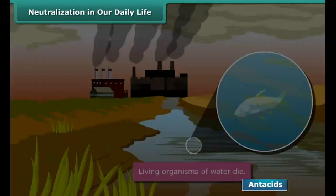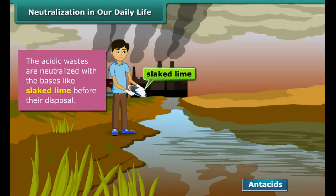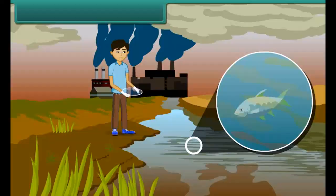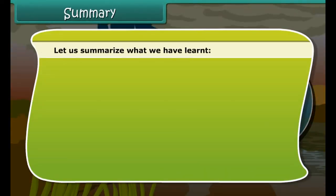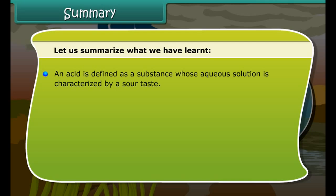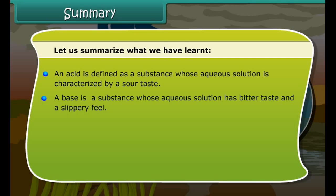Soils which we use for cultivation can become acidic or basic in nature. Basic soils are treated with organic compounds which release acid, making the soil neutral. Many factories release acidic wastes which, after falling into water bodies, damage them — as a result, living organisms in the water die. The acidic wastes are neutralized with bases like slaked lime before their disposal. Drag and drop the correct option in the blanks.